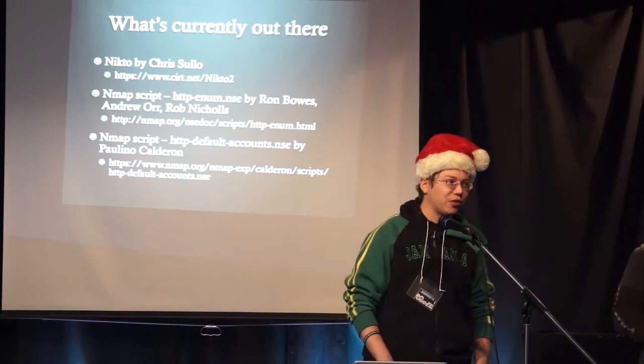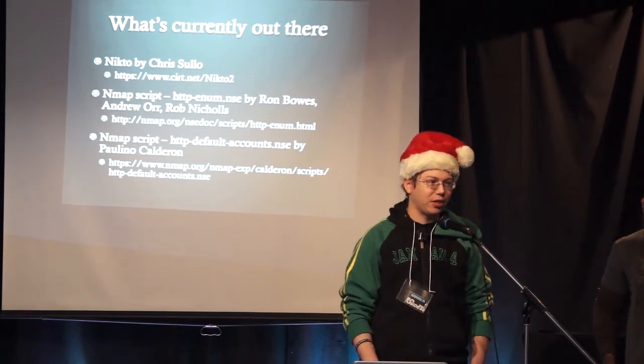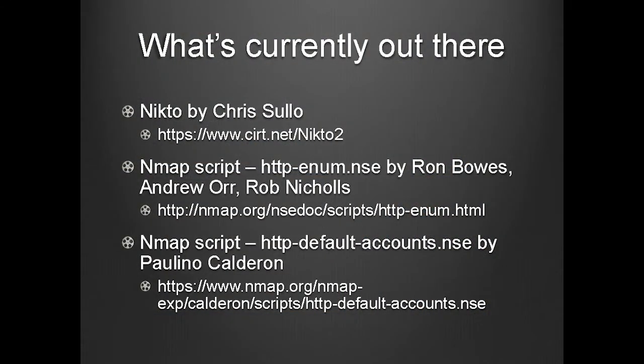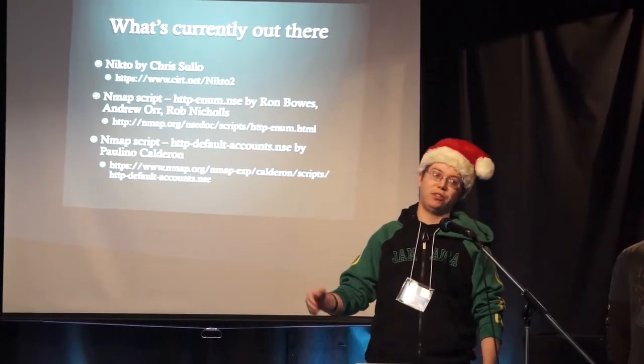There are tools out there — Nessus plugins, Nmap scripts, Nikto, RAR. But what they lack is that they don't help you identify vulnerabilities that you might be able to exploit. They let you know that something is there and it might have these credentials. What Yasuo does is tell you: this is here, it might have these credentials, and if it's vulnerable, here's what you can use to exploit it.